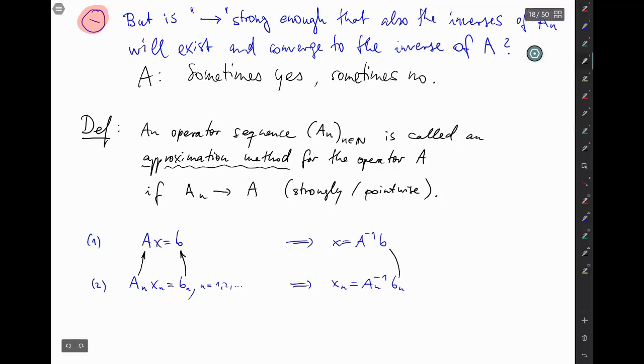The right-hand side still converge in the norm of the space Y. And, well, we also have this here. And the question is always the same. Will these X_N here also be uniquely determined and will they converge to X?